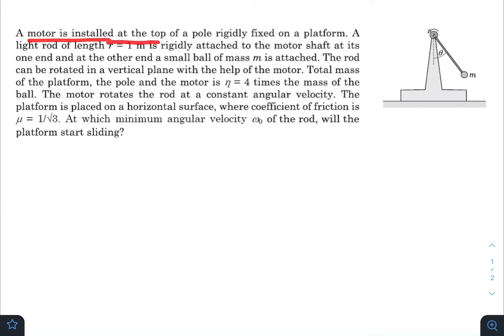A motor is installed at the top of a pole rigidly fixed on a platform. A light rod of length r is rigidly attached to the motor shaft at one end, and at the other end a small ball of mass m is attached. The rod can be rotated in a vertical plane with the help of the motor.